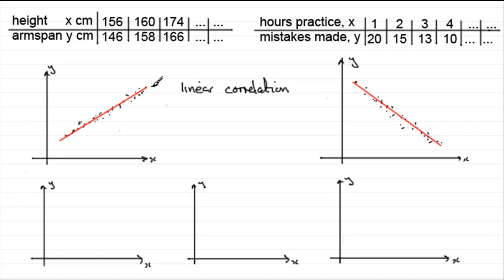And this type of linear correlation is called positive linear correlation, and no prizes for guessing what this one's going to be - clearly negative linear correlation.